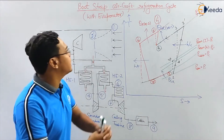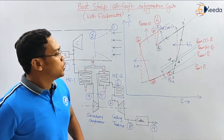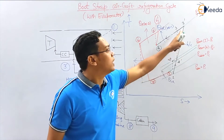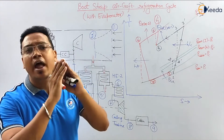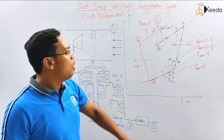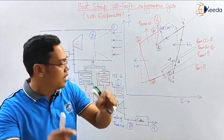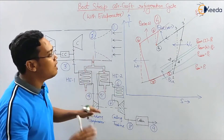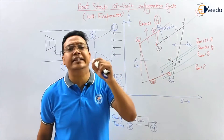Bootstrap aircraft refrigeration cycle with evaporator. From 1 to 2-dash is a ramming process. 2-dash to 3-dash is the actual adiabatic compression process occurring in the compressor. Now from 3-dash to 4-dash, it is happening in heat exchanger 1. This is the bootstrap system.